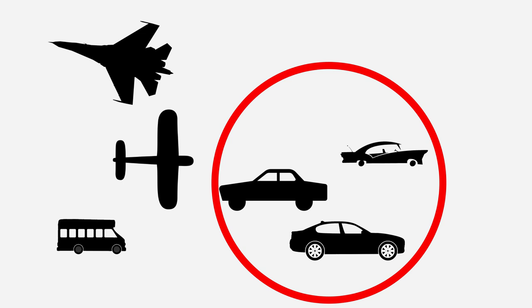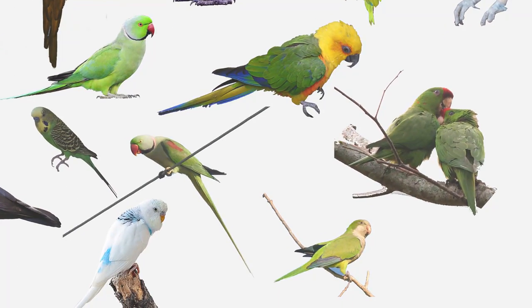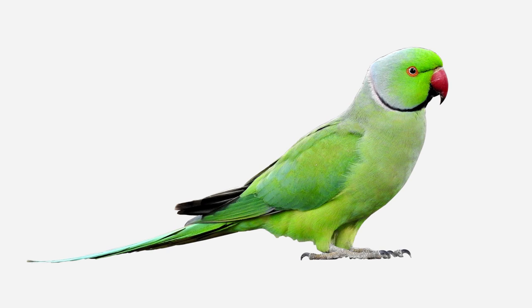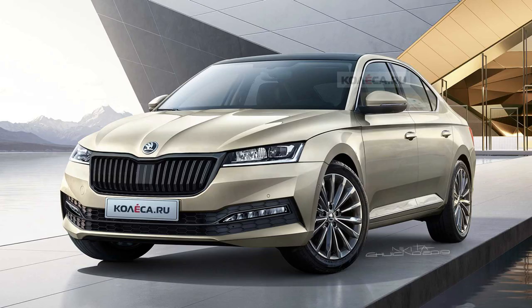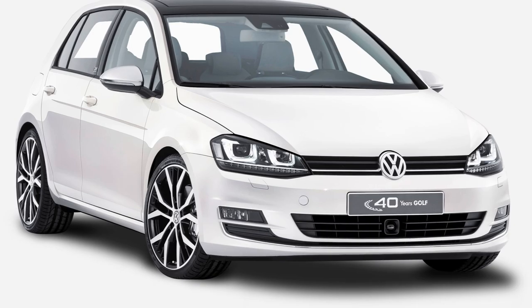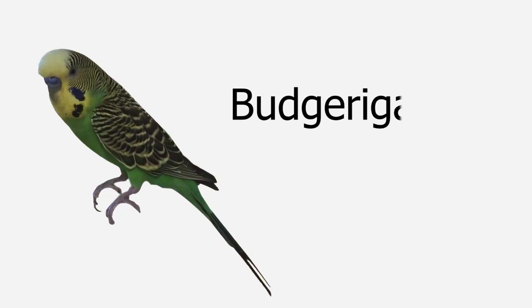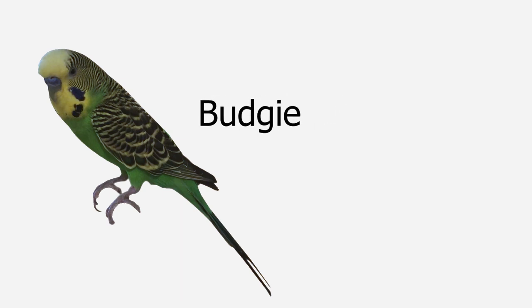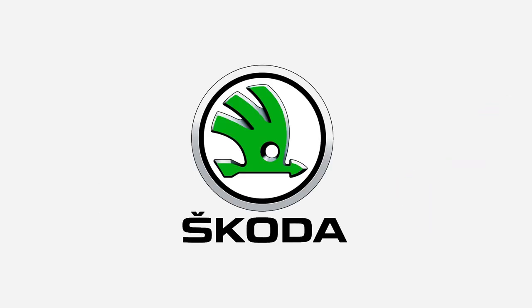If we dig even further, we find that parakeets are a subfamily of parrots. We can compare them to Volkswagen — a subcategory that has some cars but not all. It has Skoda, Polo, Passat, Golf, and so on. And finally we get to budgies, which is one type of parakeet. Comparing to cars, we can choose one type from the Volkswagen lineup — let's say Skoda.